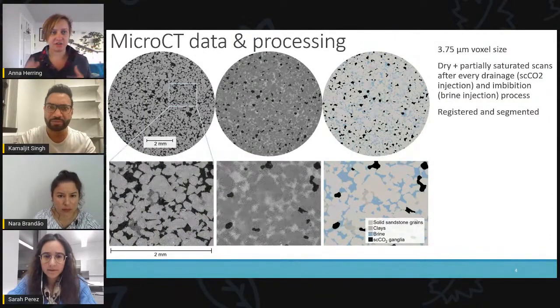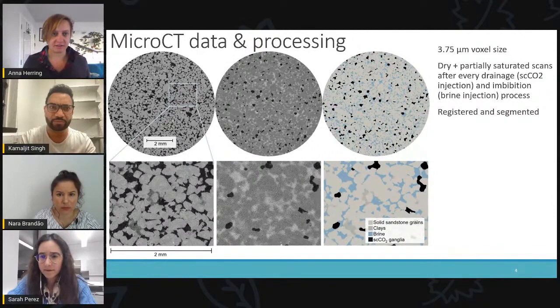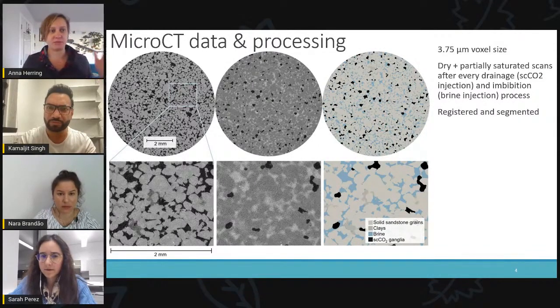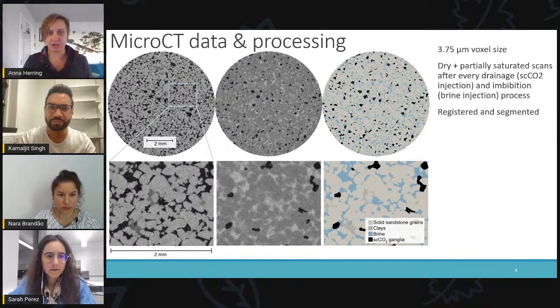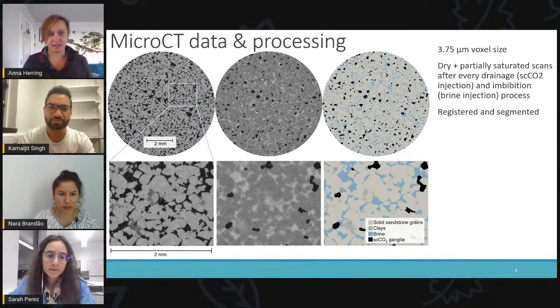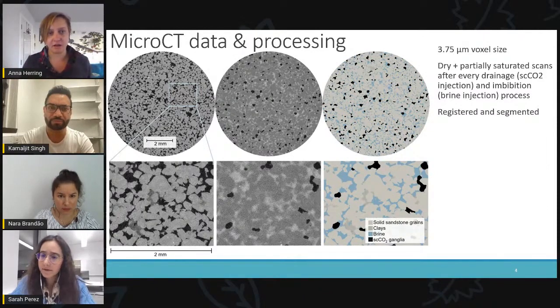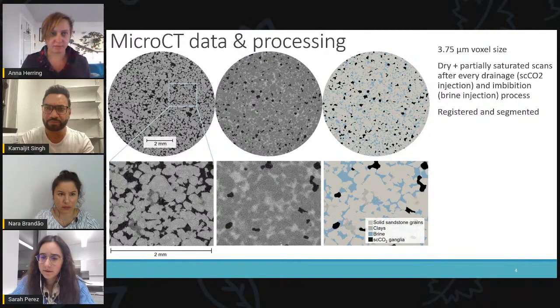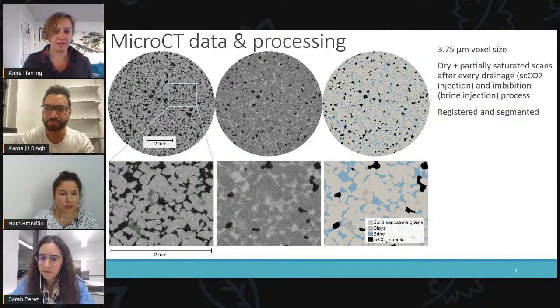In terms of data processing, it's just your classic micro CT data processing. We scanned the dry rock first. And then, of course, we take a scan at the end point of every injection process. And then we can register, combine and segment the scans together so that we can get a four phase segmentation where we can distinguish sandstone grains, some of the clays, and then, of course, the brine and the CO2 phases.